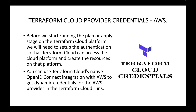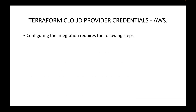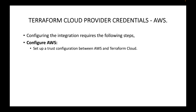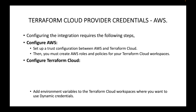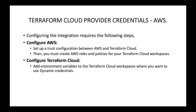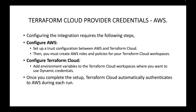So this is where we will have to provide the credentials so that it can create the resources for us. Configuring the authentication integration requires the following steps: we will need to do the configuration on AWS — creating a trust relationship between AWS and Terraform Cloud, then creating a role and attaching the policy so Terraform Cloud can create resources, and then we will have to configure the Terraform Cloud by adding a couple of environment variables in the workspace where you want to use the dynamic credentials.